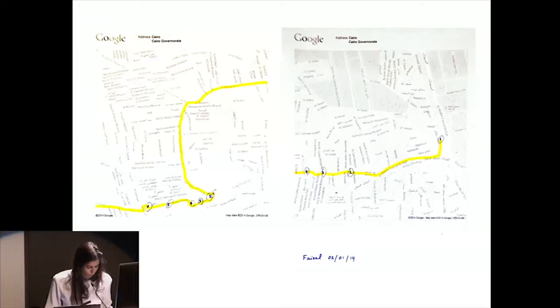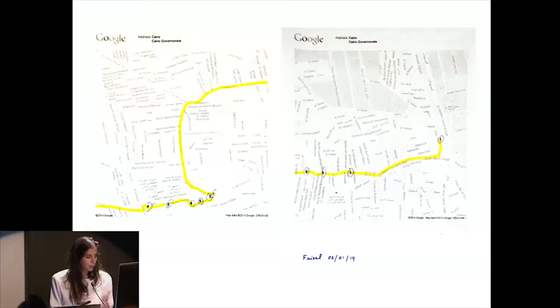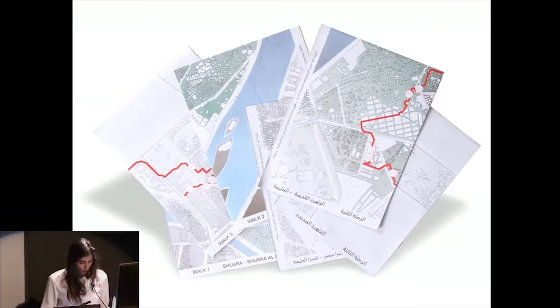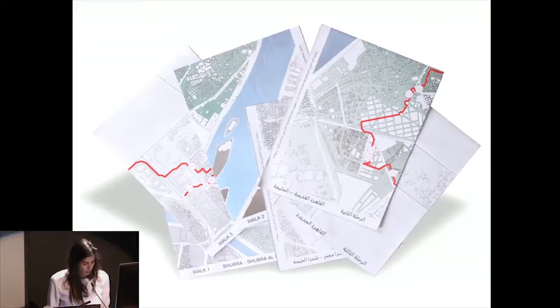We would print out basic Google Maps, take our Polaroid camera, and head out on the weekend for these walks. We would number the corresponding images to these analog printed maps to pin them later onto an online map of Cairo with all of the chairs we found. We would conduct interviews with the different chair owners. The book includes three maps to show our movement through the city and how we collected the images.